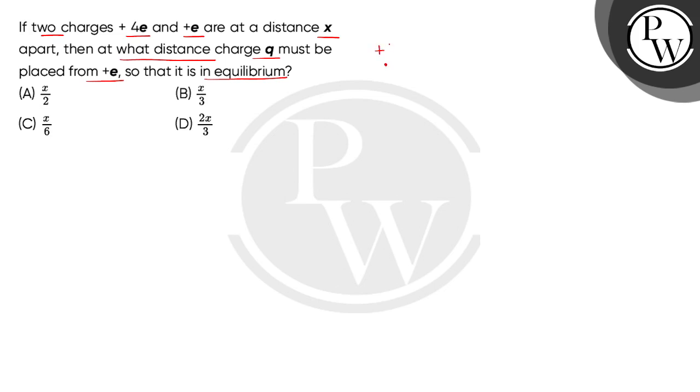So children, two point charges given are +4e and +e and the distance between them is x. Now we have to take one charge, the third charge, which is q from the question, and how far do we place it?